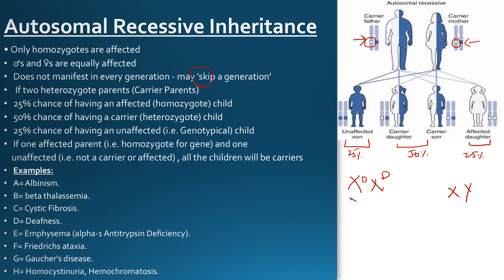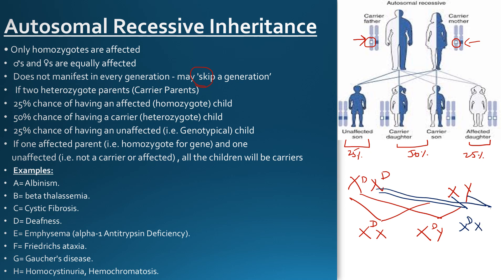Here is another example in which one parent is homozygous for the disease whereas the other one is unaffected. In this case, all of their children will be carriers. As we can see, all the offspring have one mutated gene, which means all of them are carriers. For an autosomal recessive disorder to manifest, two mutated genes are needed.